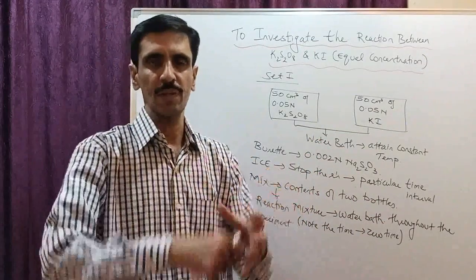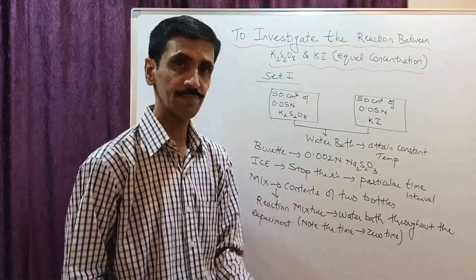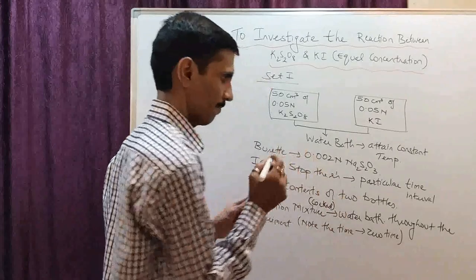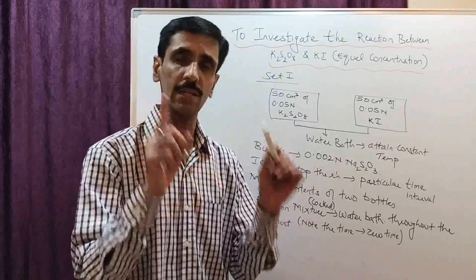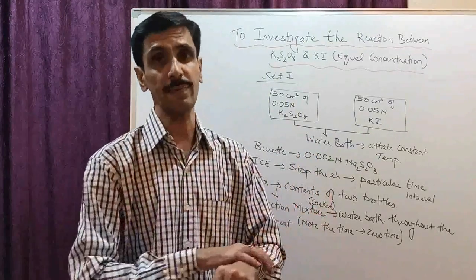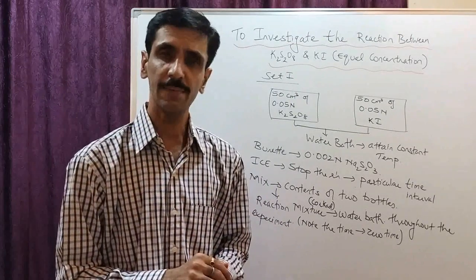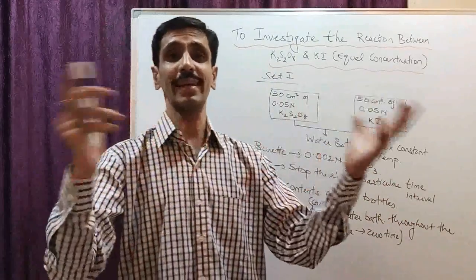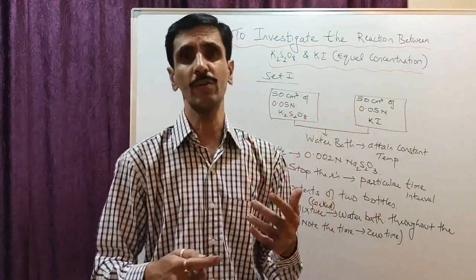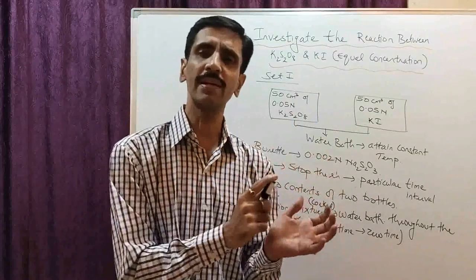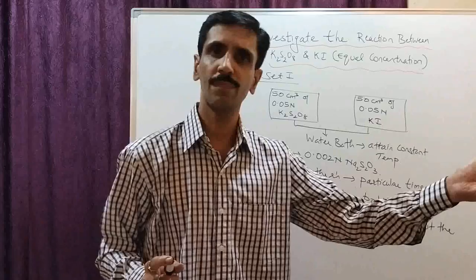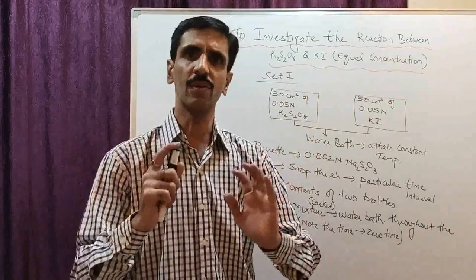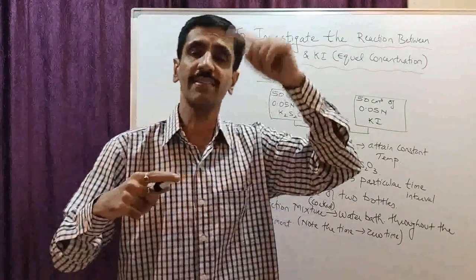Now you need to take readings. There are two possibilities: you can take readings at intervals of 5 minutes from zero time, or at intervals of 10 minutes. The choice is yours, but whatever interval you choose, keep it constant for both Set 1 and Set 2. In this demonstration, I have used 10-minute intervals. Please ensure uniformity — do not switch between different intervals.